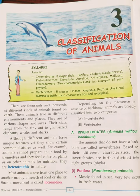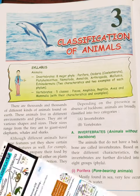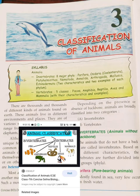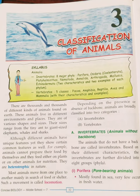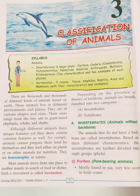Porifera — pore-bearing animals. They are mostly found in the sea; very few occur in freshwater. They attach to some object or to the bottom of a pond or ocean. The body is porous, with tiny pores to draw water into the body cavity and one large pore to pass it out. A common example is the sponge.